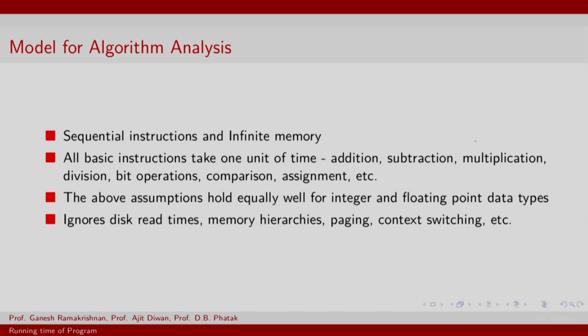However, you could multiply a number x by 2 by basically shifting bit shifting x to left by one bit position. In fact, you can do the same thing for kx, kx is shifting x to left by k positions. So, we will assume that these are all to be treated on the same scale. And we will make these assumptions for both integer and floating point data types. In this process, we are ignoring disk read times, memory hierarchies, paging, context switching and so on. So, this is really moving away from our messy empirical setup.